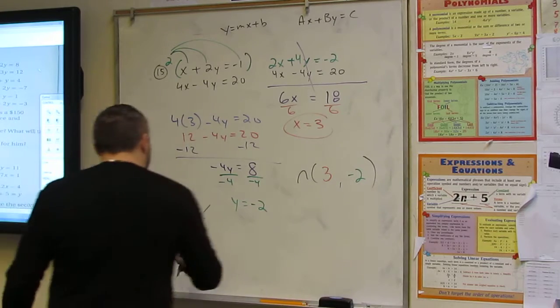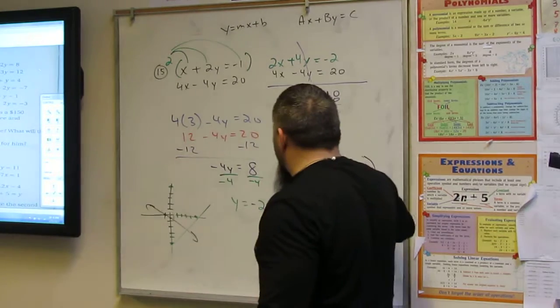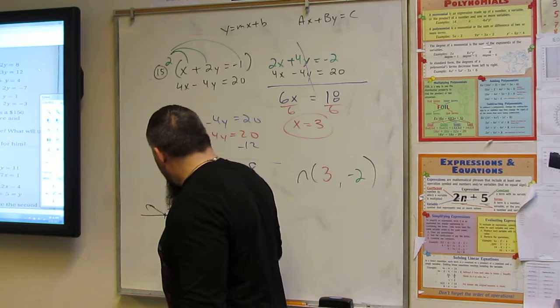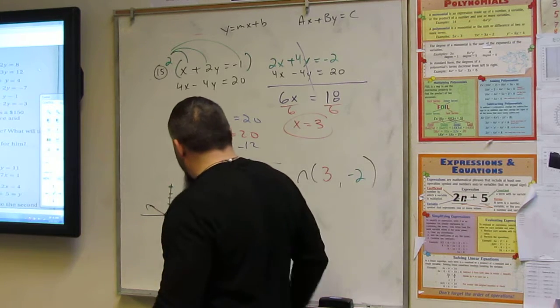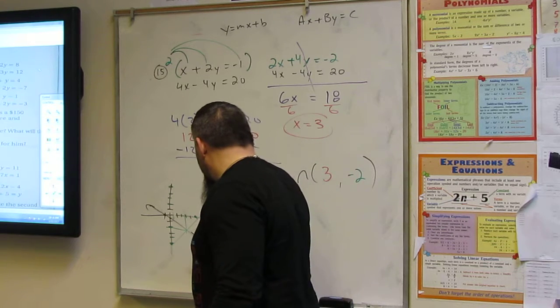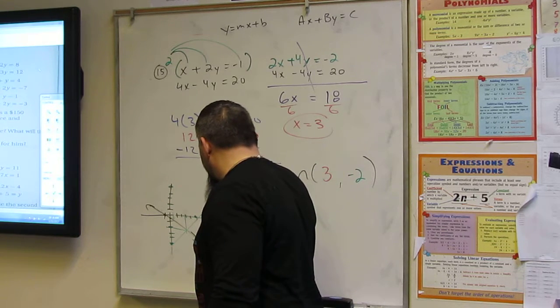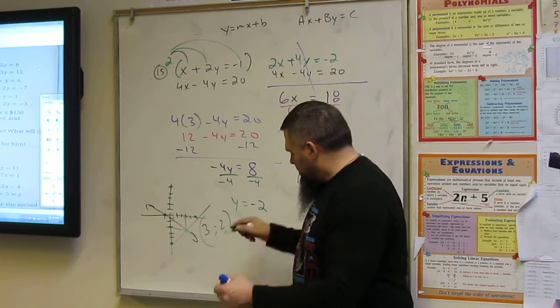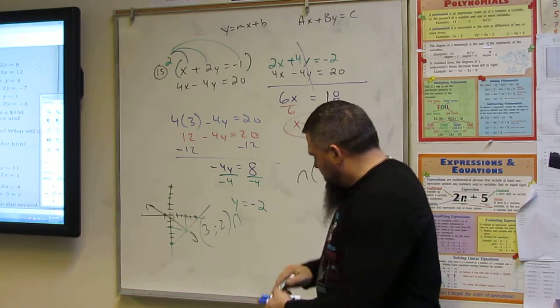And I've got to think, is this at three, negative two? So we go one, two, three, and negative two. So three, negative two. That's the intersect.